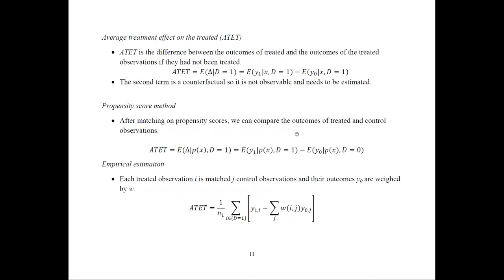The counterfactual — the outcome for treated observations had they not been treated — is not observable, since we cannot remove the treatment. This is where propensity score matching comes in: we compare outcomes of treated and control observations after matching on propensity scores to make them as similar as possible, enabling a fair direct comparison.